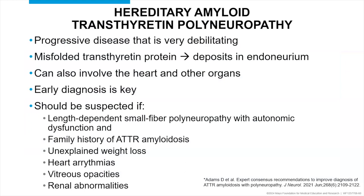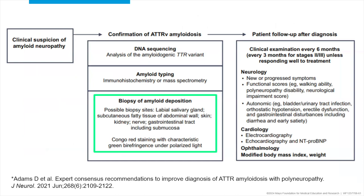Briefly on hereditary ATTR amyloid polyneuropathy: it's a progressive, very debilitating disease where early diagnosis is key. From the pathology portion, biopsy is obviously very important in identifying these patients, but the biopsy is not always of the nerve. Even if the patient has a nerve biopsy that's negative, there may still be amyloid there. So there's a lot of value in considering other biopsy sites, particularly if they have systemic amyloidosis deposited in other organs that might be easier to biopsy. We can confirm it and then send it for typing.